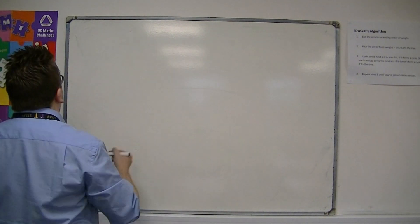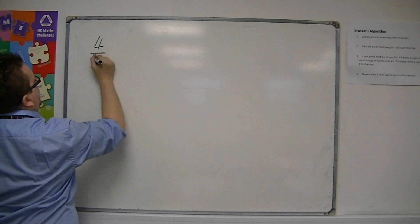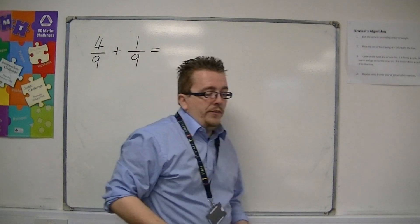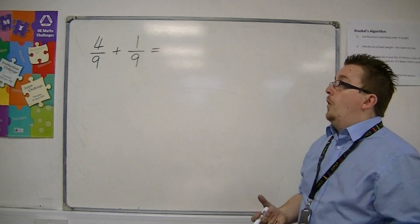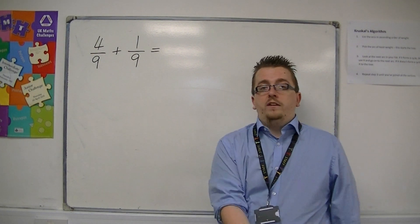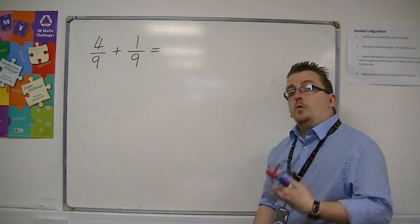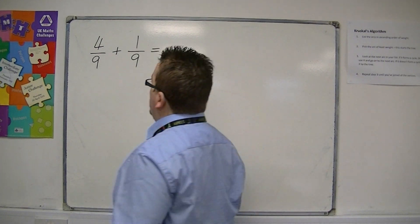So if you have something like 4 ninths plus 1 ninth, then you can think of this in much the same way as if I said to you, how many cars would I have if I had 4 cars and I add 1 car? You'd say you had 5 cars. So 4 ninths plus 1 ninth is 5 ninths.